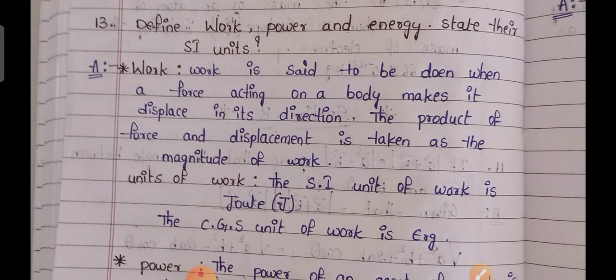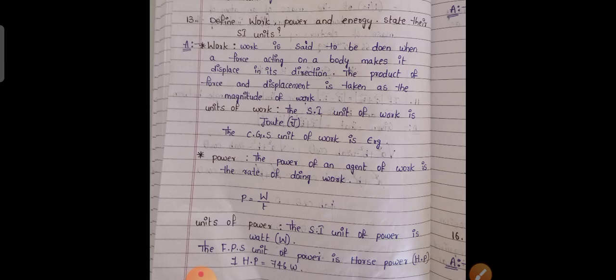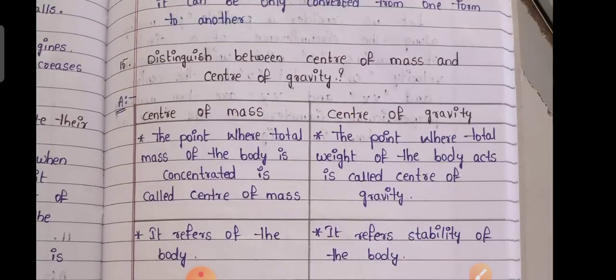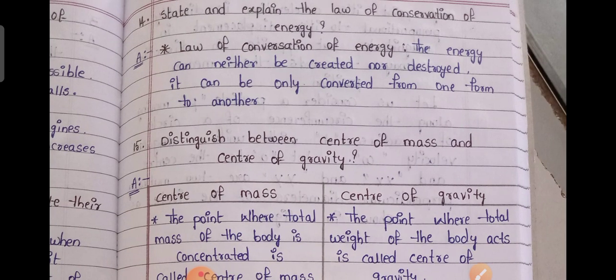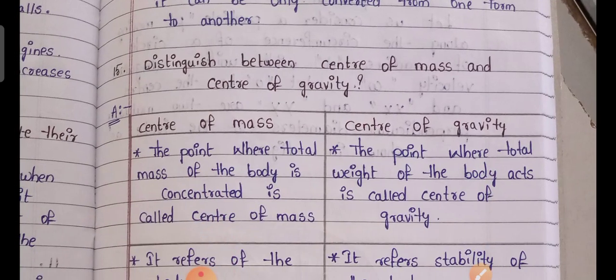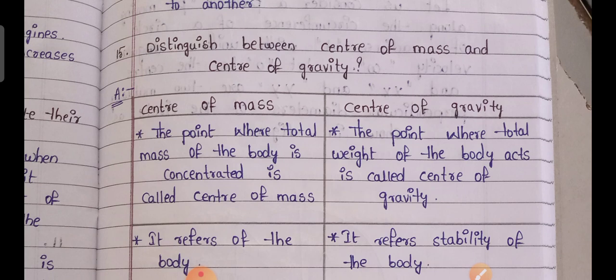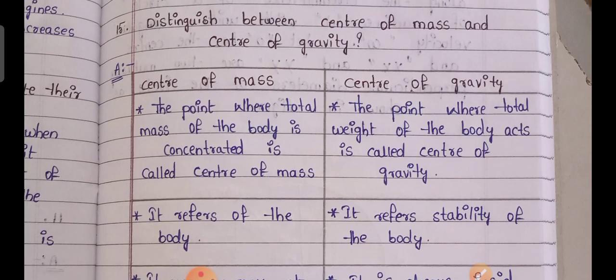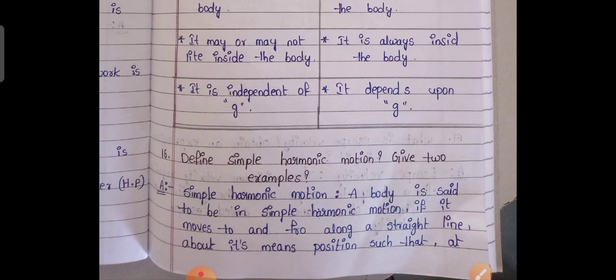The thirteenth question is a very lengthy answer — we have to define work, power, and energy. Next, fourteenth: state and explain the law of conservation of energy. Fifteenth: distinguish between centre of mass and centre of gravity. When answering a 'distinguish between' question, divide your answer into two rows or two boxes — you will get better marks. At least four points are given; try to read at least two lines.